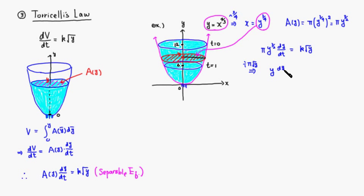Then you have y dy/dt equals k divided by pi. We can just take the integral with respect to t, so you have an integral with respect to t on both sides.